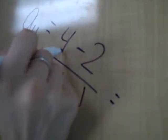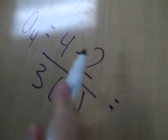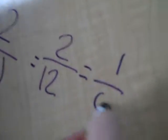When solving for a sub 4, you take 4 and put it in place of n. So 4 minus 2 is 2, and 3 times 4 is 12, which simplifies to 1/6.